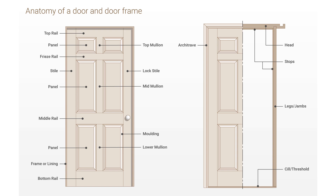Now we will see some more parts. This is called the freeze rail, also known as cross rail. This is called the mid rail, also known as lock rail. Then we have different panels - panel one, panel two, panel three, panel four, panel five and panel six. So this door totally has six panels. This is called the top mullion, the middle mullion and the lower mullion. The bottom rail is the bottom horizontal part.